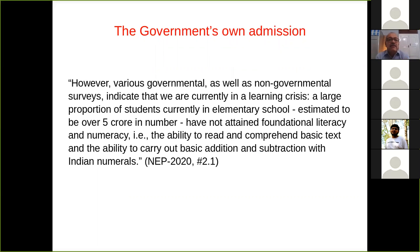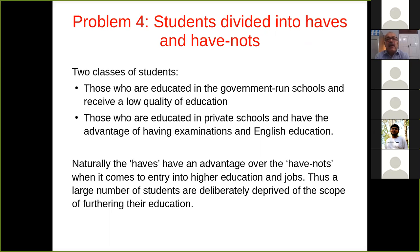The government's own admission in the NEP document, article 2.1, says: 'We are currently in a learning crisis. A large proportion of students currently in elementary school — estimated to be over 5 crore — have not attained foundational literacy and numeracy, that is, the ability to read and comprehend basic text and the ability to carry out basic addition and subtraction with Indian numerals.' This is a really pathetic situation. As a result, students are now divided into haves and have-nots — those who go to government-run schools and receive low-quality education, and those educated in private schools who receive relatively better quality education with examinations and English.